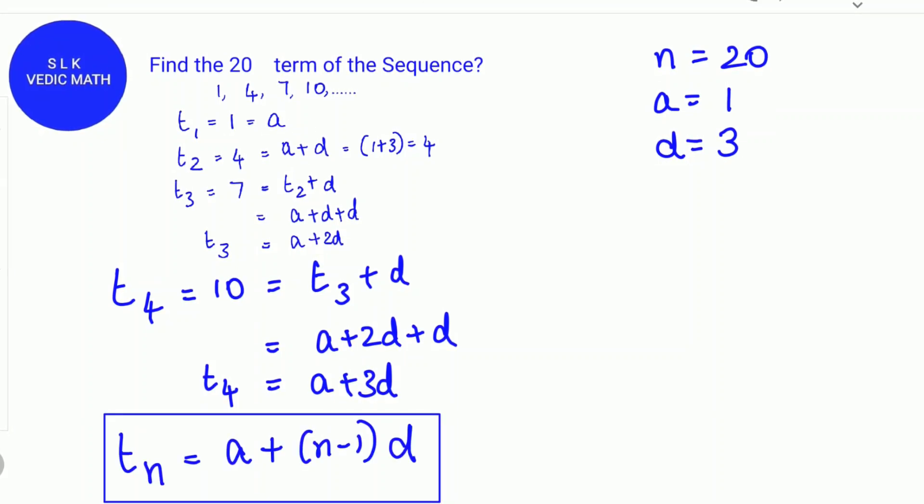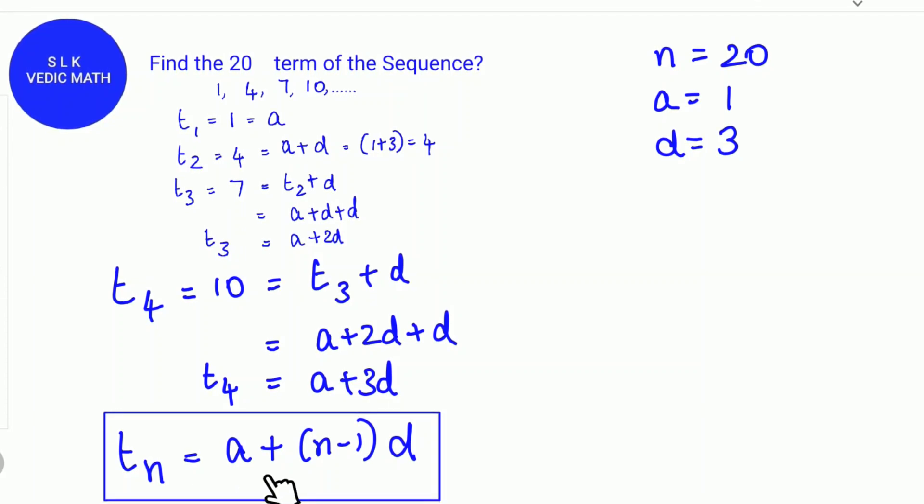To find the nth term, Tn equals a plus (n-1) into d.